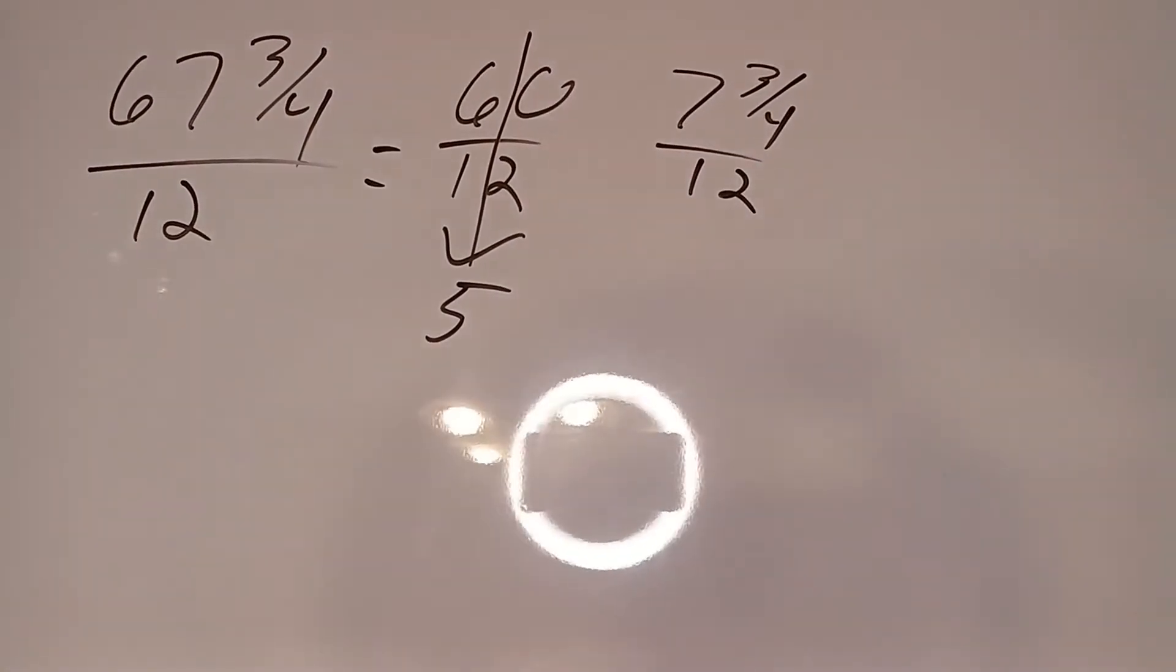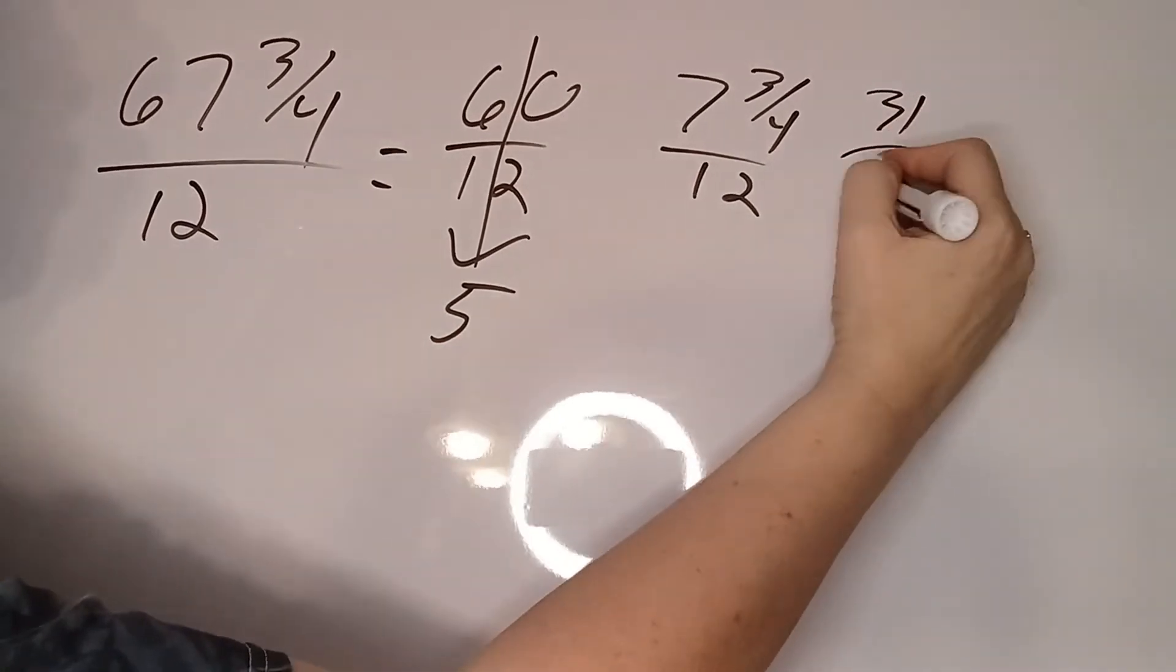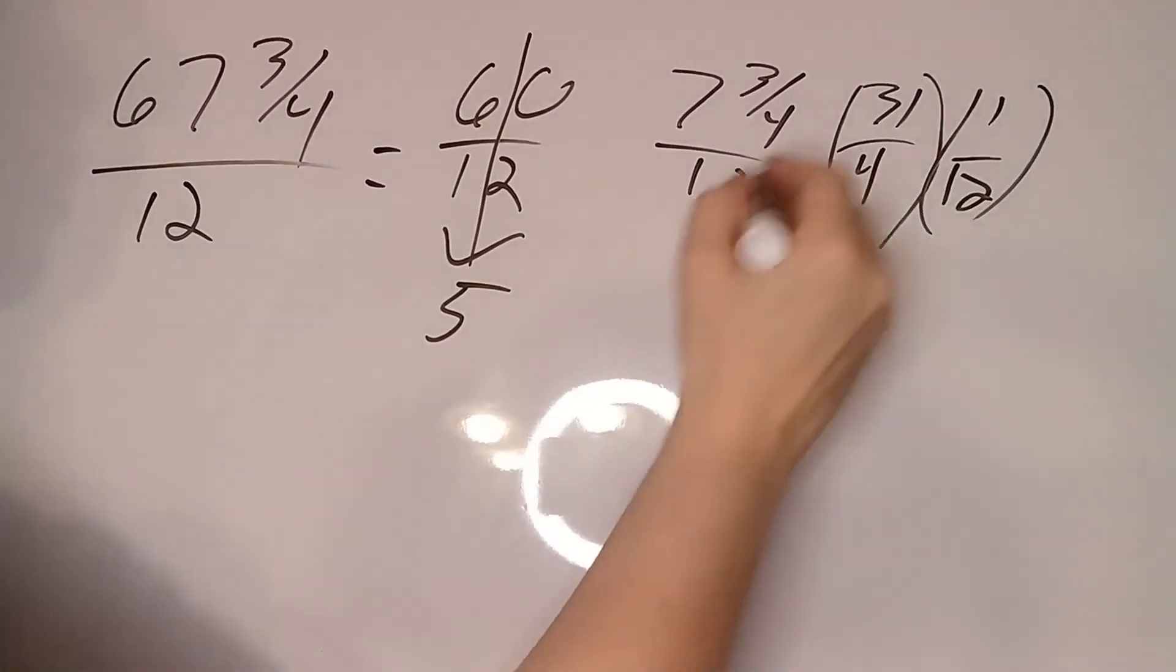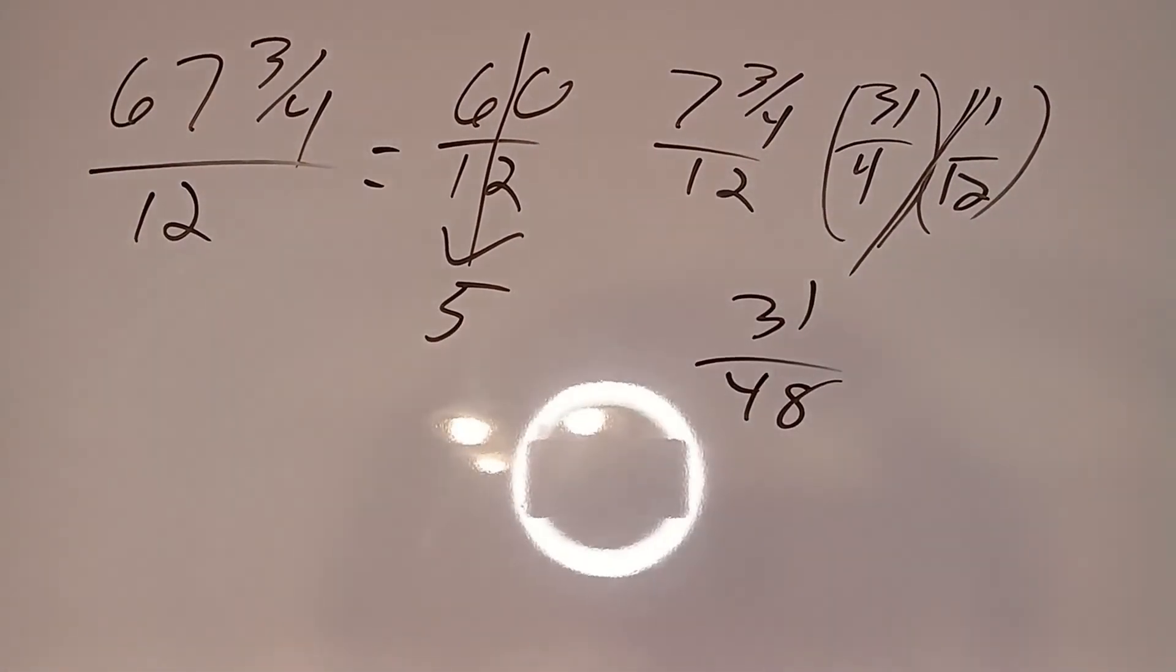Now that's why we do the improper fraction thing. 4 times 7 is 28 plus 3 is 31. So we get 31 over 4, 1 over 12, and we get 31 over 48. That's our fraction.